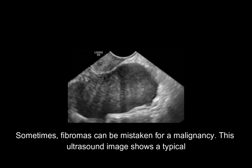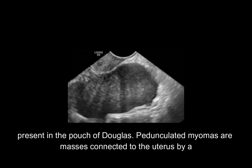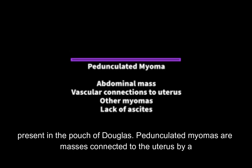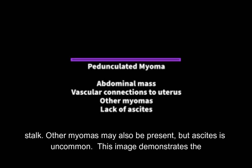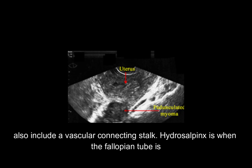This ultrasound image shows a typical ovarian fibroma: a solid tumor with stripe-like attenuated echoes. In addition, fluid may be present in the pouch of Douglas. Pedunculated myomas are masses connected to the uterus by a stalk. Other myomas may also be present, but ascites is uncommon. This image demonstrates the uterus with a pedunculated myoma that is closely adherent to the uterine body. Typical features also include a vascular connecting stalk.